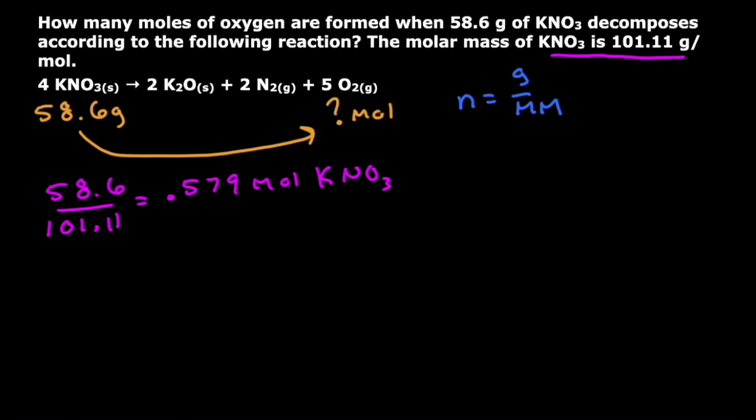And so what I'm going to do is I'm going to write down that I got 0.579 moles of KNO₃. And then from the balanced reaction,